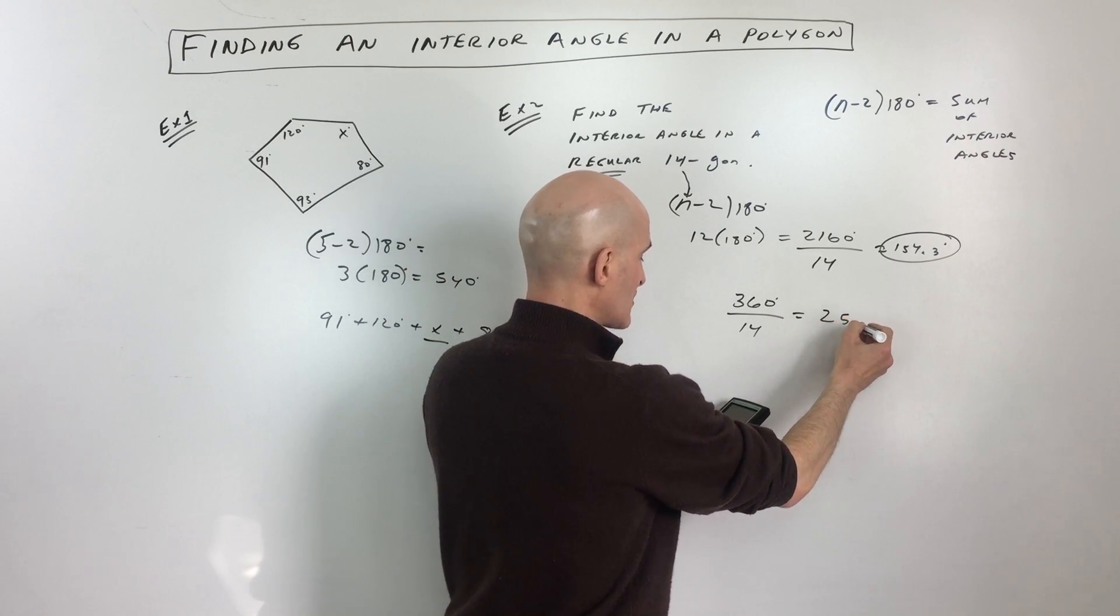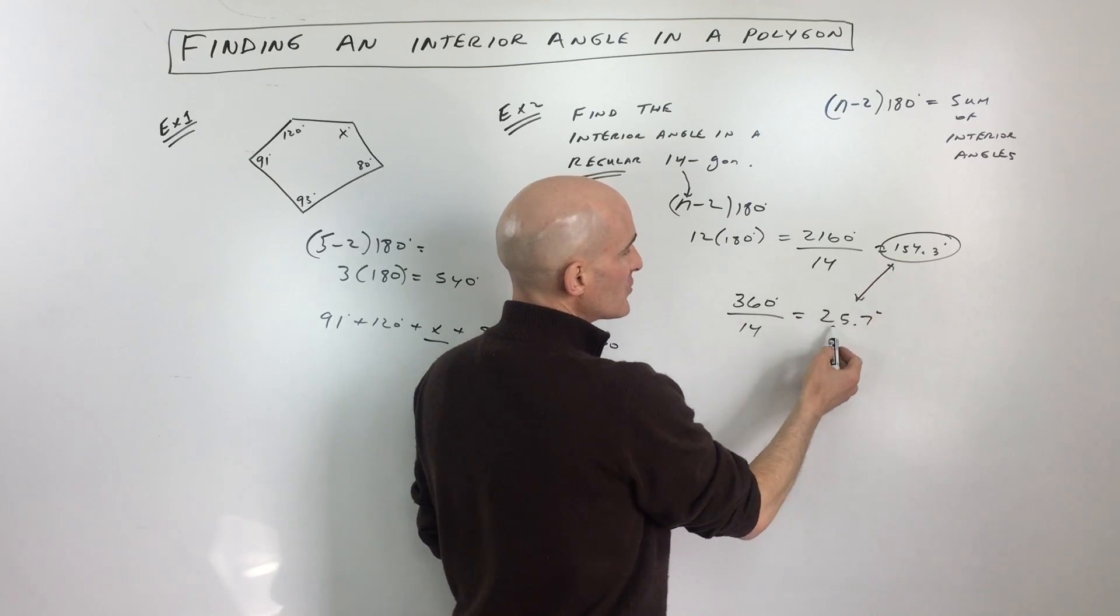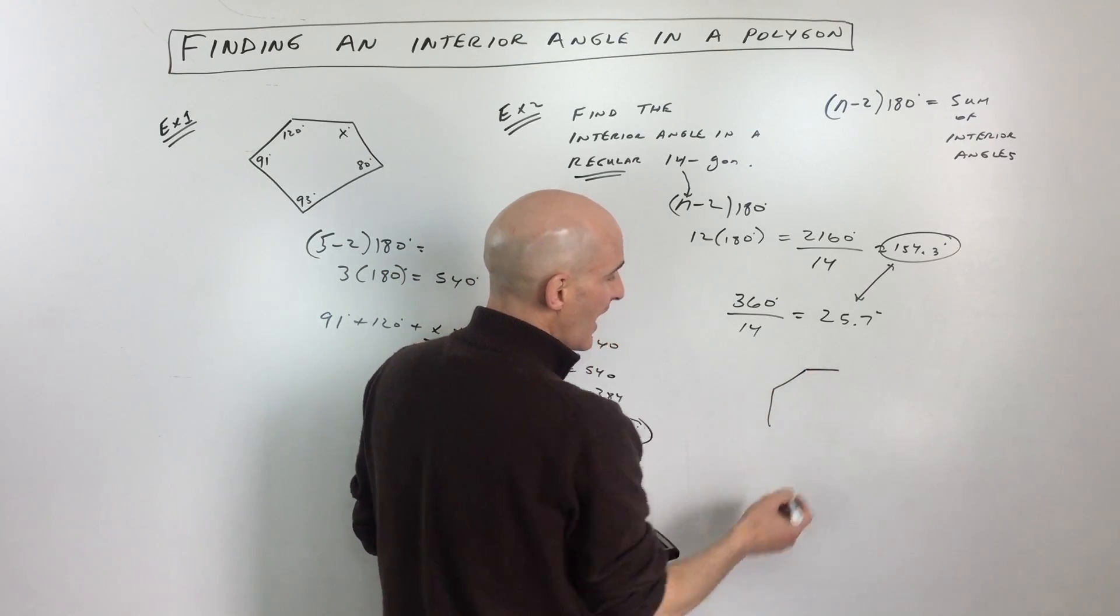So basically, the exterior angle is coming out to 25.7, and one thing you'll notice about these two angles is that they're supplementary. They add up to 180 degrees. So I don't actually know how to draw a 14-gon.